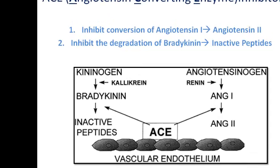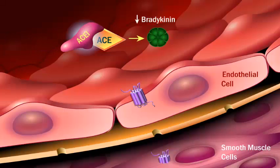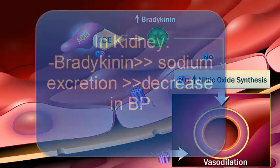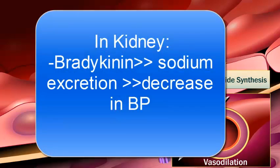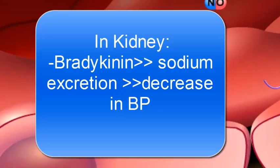ACE is also involved in the kallikrein-kinin system by acting as a catalyst for the degradation of the active peptide bradykinin. When an ACE inhibitor is given to a patient, there will be an accumulation of bradykinin. Bradykinin stimulates the production of nitric oxide, which promotes vasodilation of blood vessels. In the kidney, bradykinin promotes natriuresis, which is the excretion of sodium, by acting directly on the tubules. This also plays a role in decreasing blood pressure.